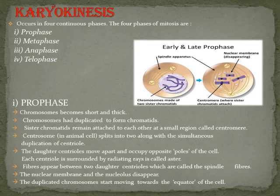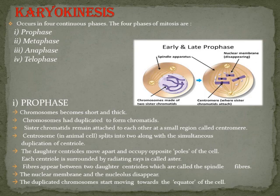Interphase has chromatin fibers as long threads. In prophase, chromosomes become short and thick. The chromatin fibers condense to form visible chromosome structures. Chromosomes have already duplicated in the S phase to form chromatids — you can see these in early prophase diagrams.